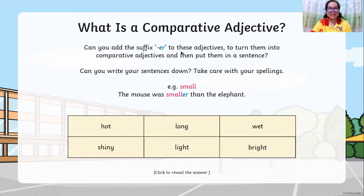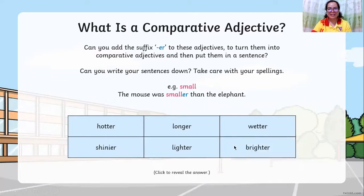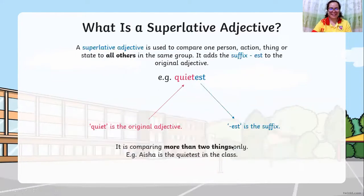Can you add the suffix -er to these adjectives to turn them into comparative adjectives and put them in a sentence? Take care with your spellings. For example: small→smaller, hot→hotter, long→longer, wet→wetter, shiny→shinier, light→lighter, bright→brighter.